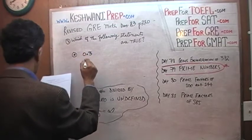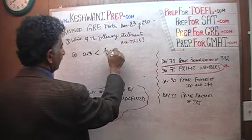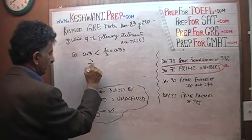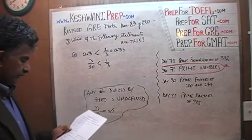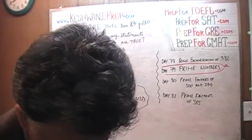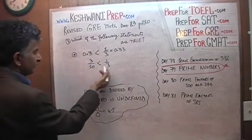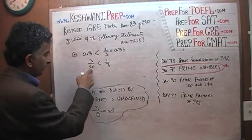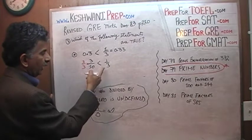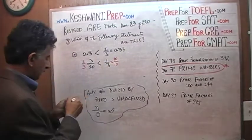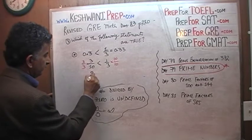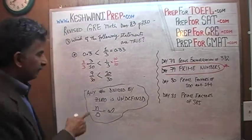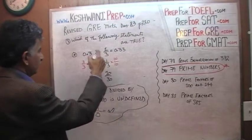Statement E says 0.3 is less than 1/3. Of course, because 1/3 equals 0.33. Therefore 0.3 is less than 1/3 — or if you like, 3/10 is less than 1/3. How do we know? You make the denominator the same: the common denominator of 10 and 3 is 30. Multiply 3/10 top and bottom by 3 to get 9/30, and multiply 1/3 top and bottom by 10 to get 10/30. You can clearly see 9 is less than 10. True.